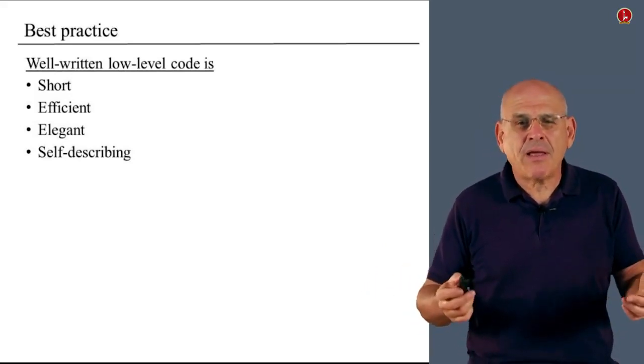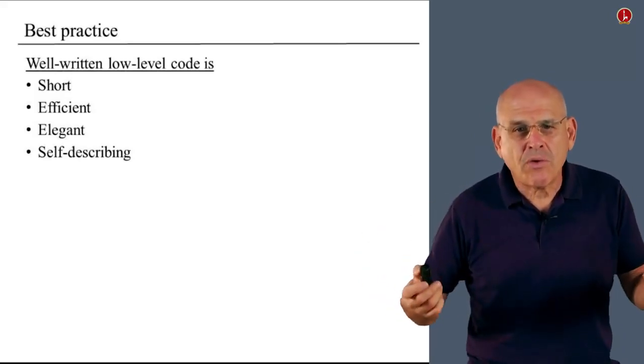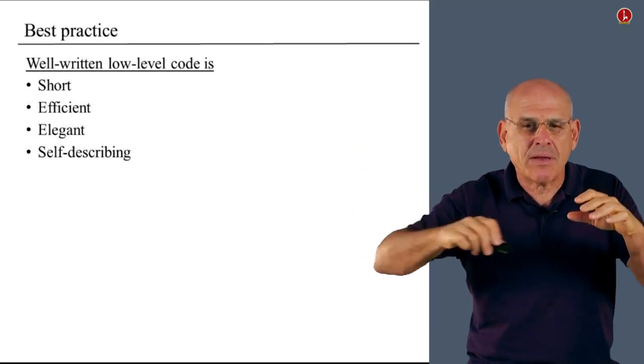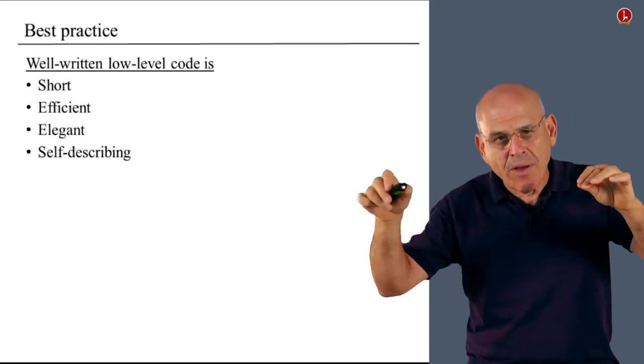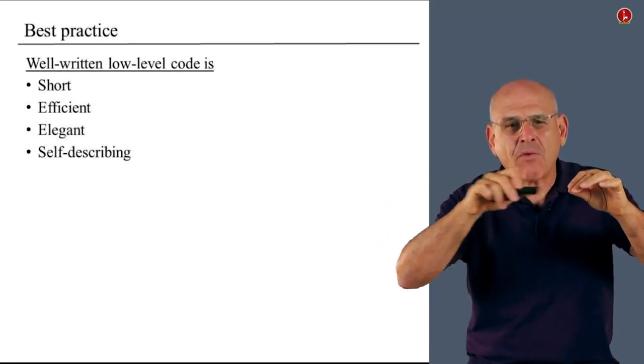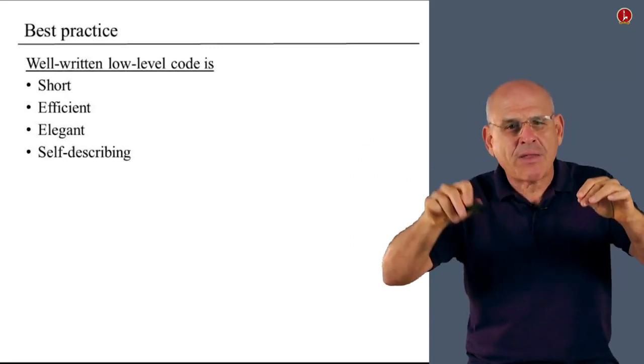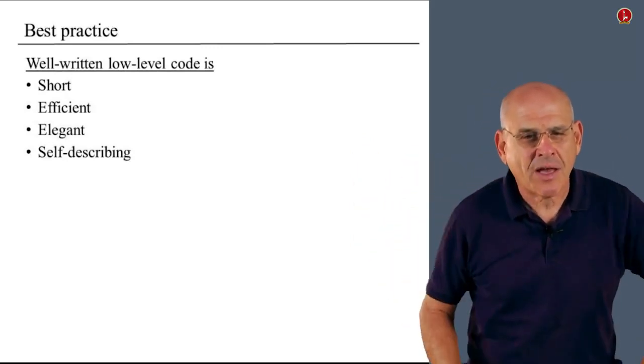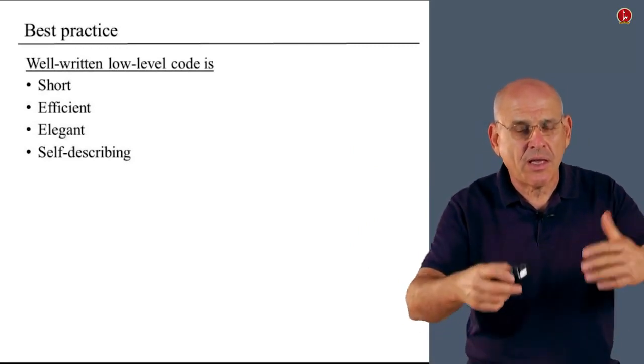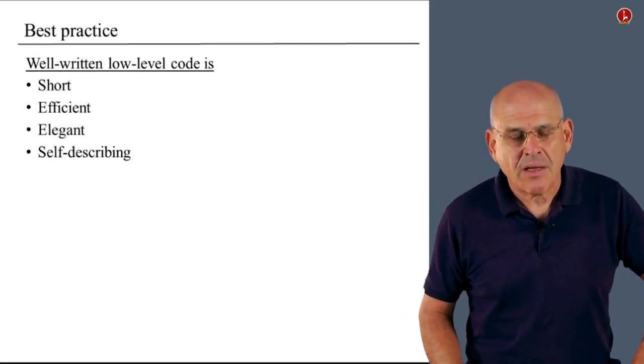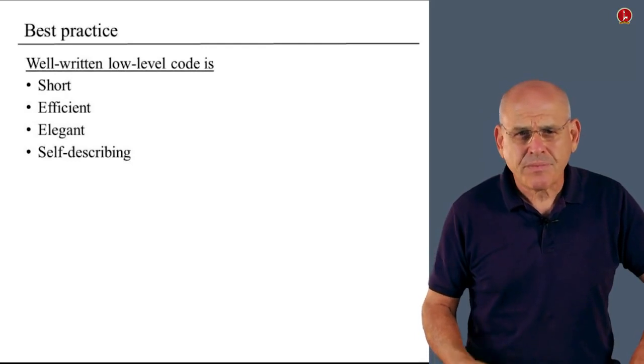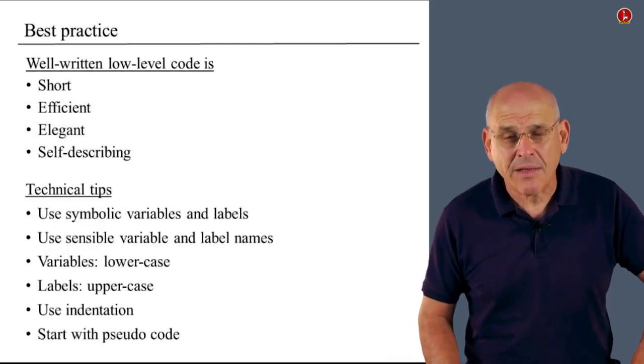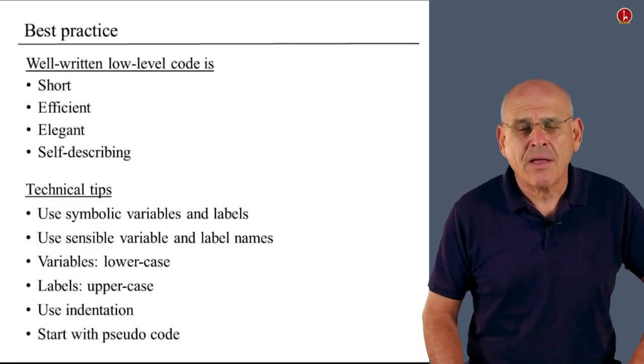So we expect you to document the programs, but do it by using some judgment. Don't over-document the program. The best thing to do is simply to look at our examples and to follow something similar. Typically we use some high level operation to describe, we start a comment, we write something like here we're going to say if i is greater than n, go to, and then we write the six or seven instructions in machine code that actually implement this semantics.